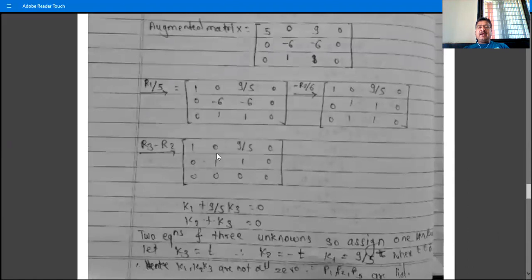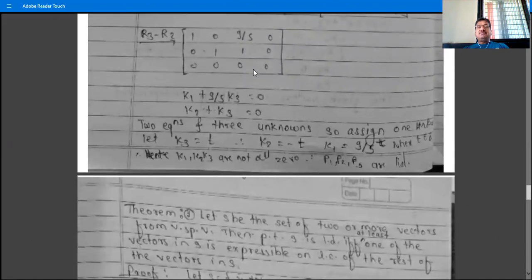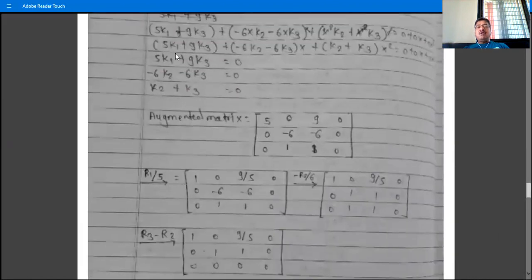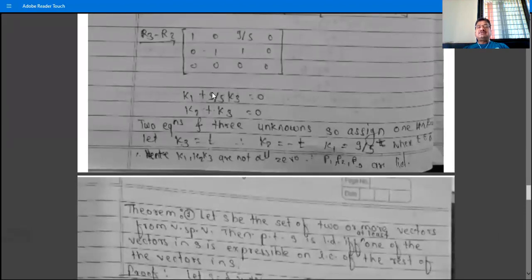Here rank(A) = rank([A|b]) = 2, strictly less than 3 unknowns, so the system has non-trivial solutions — k1, k2, k3 are not all zero. Rewriting equations: k1 + (9/5)k3 = 0 and k2 + k3 = 0. There are 3 unknowns and 2 equations, so assign one free variable. Let k3 = t (any real number), then k2 = -t and k1 = -(9/5)t.